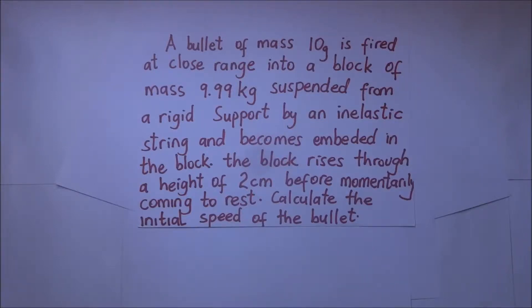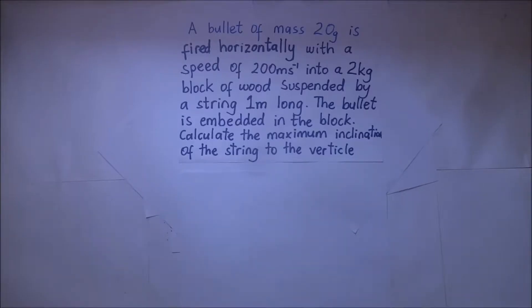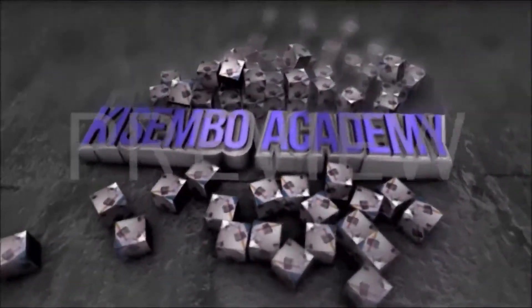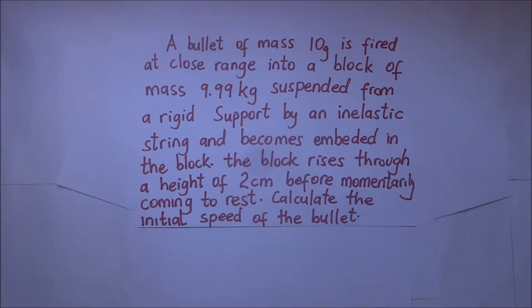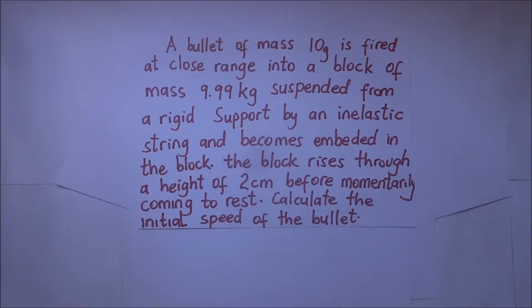We will solve problems relating to the ballistic pendulum. A bullet of mass 10 grams is fired at close range into a block of mass 9.99 kilograms, suspended from a rigid support by an inelastic string, and it becomes embedded in the block. The block rises through a height of two centimeters before it momentarily comes to rest. Calculate the initial speed of the bullet.